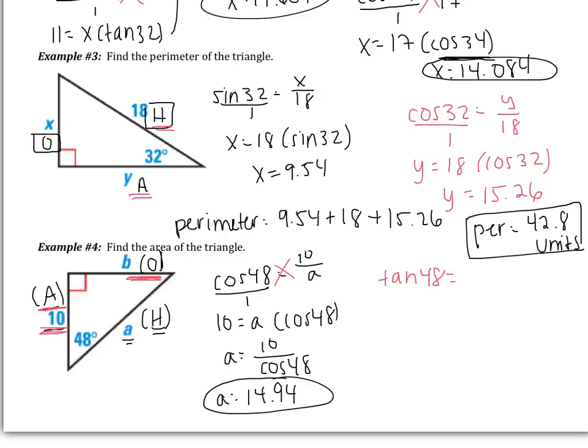Now the ratio that uses opposite and adjacent is going to be tangent. So you should have done the tangent of 48 degrees is equal to the opposite side, which is B, over the adjacent side, which is 10. Putting this over 1, we can do cross products. We get B is equal to 10 multiplied by the tangent of 48. So in this case, B is 11.11.